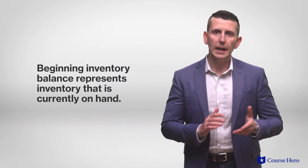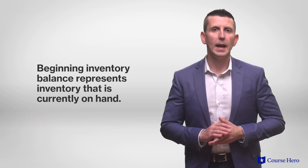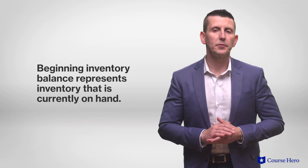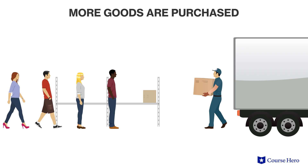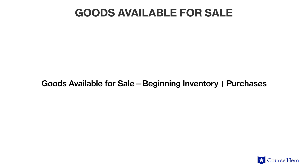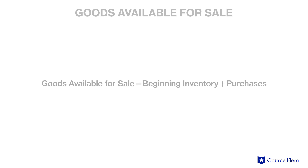The components of this equation represent the flow of inventory as goods are bought and sold. The beginning inventory balance, also known as goods on hand, represents the inventory that is currently on hand from a prior period. The ending inventory amount from the prior period automatically becomes the beginning inventory amount in the current period. In the current period, the company may purchase more goods if those on hand are not sufficient. The sum of the beginning inventory plus the purchases made during the period equals goods available for sale, which represents the total amount of goods or inventory available to sell to the company's customers.